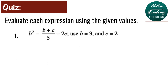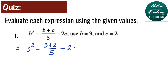Question number 1. Evaluate b squared minus the quantity b plus c, all over 5, minus 2c, using b equals 3 and c equals 2. The first step is to substitute the value for each variable. Our b is 3, so we have 3 to the 2nd power minus 3 plus 2 all over 5, minus 2 times 2.